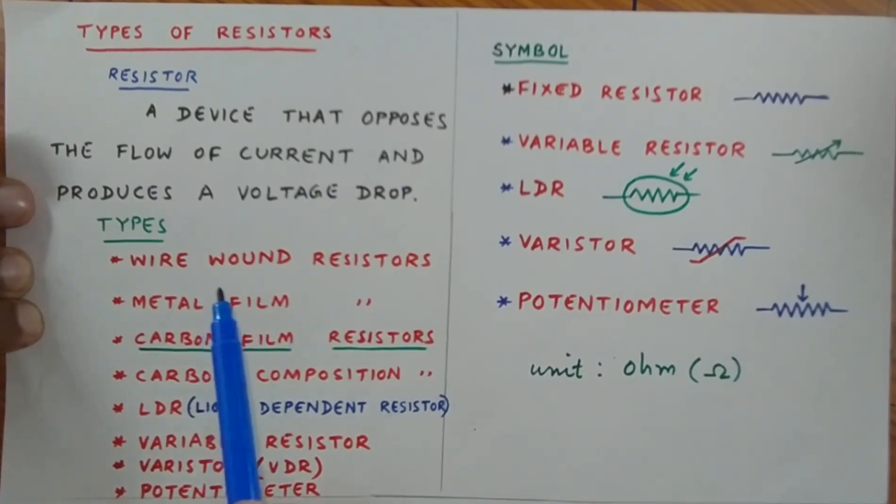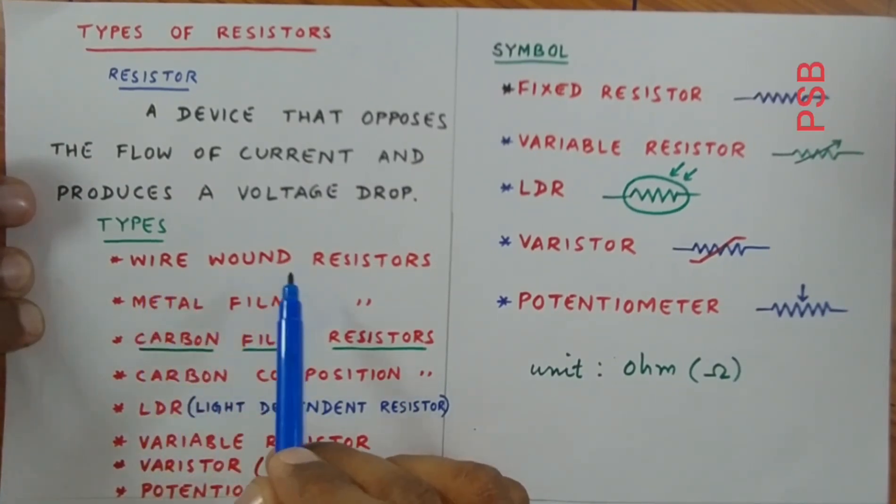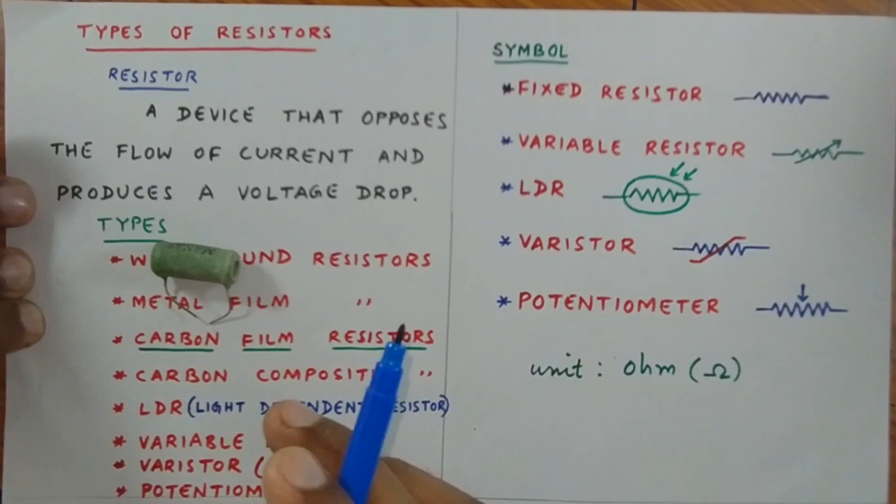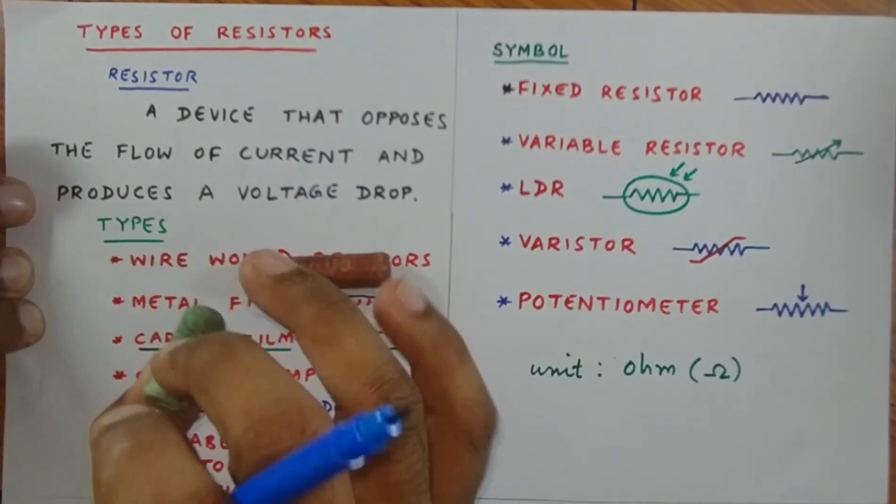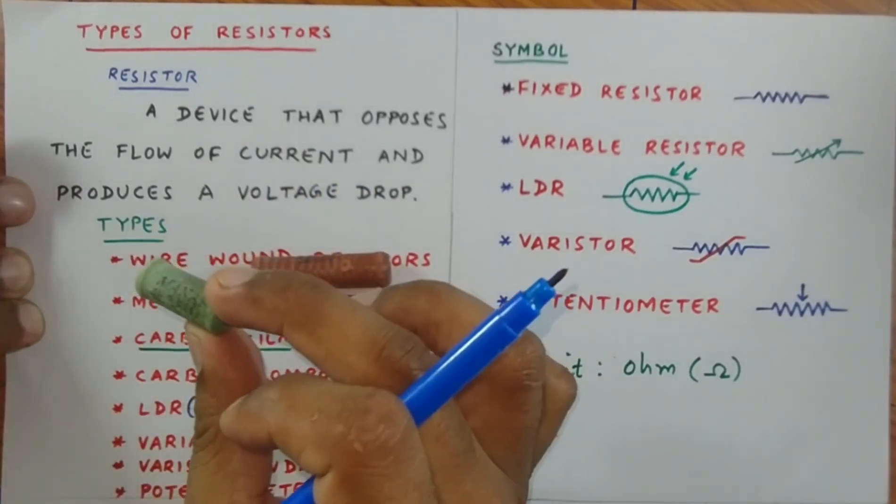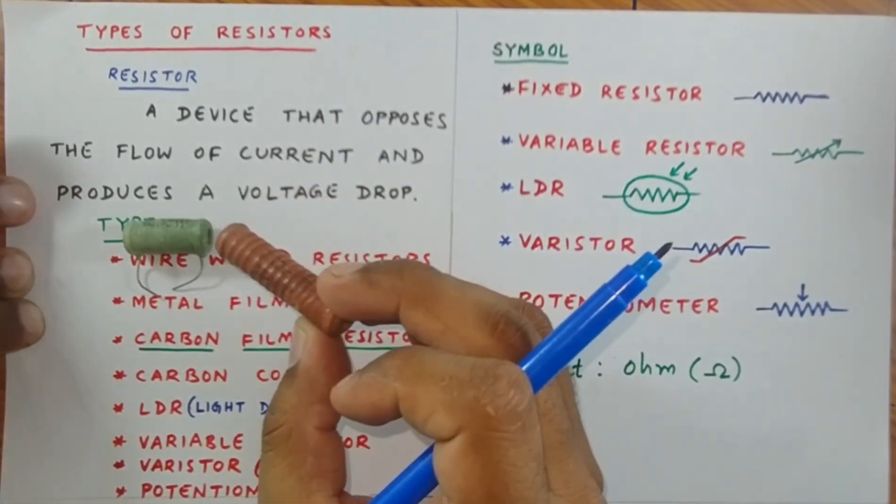The first type is wire wound resistors. This one is a wire wound resistor. Another one I have is also a wire wound resistor. There's a 5 watt wire wound resistor, and this one's power rating is 10 watts. That's all about wire wound resistors.